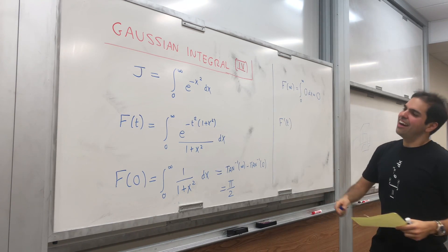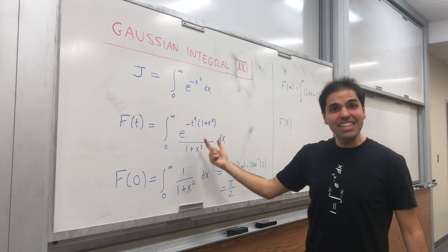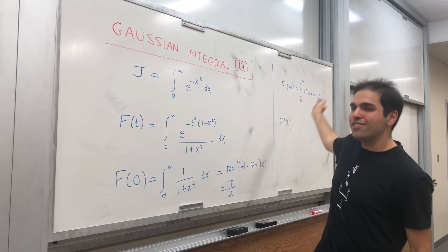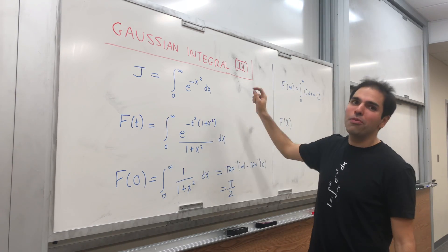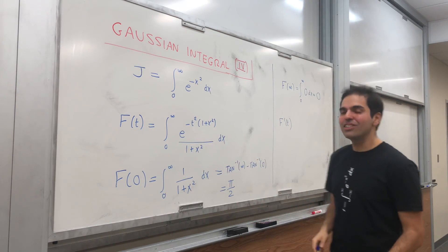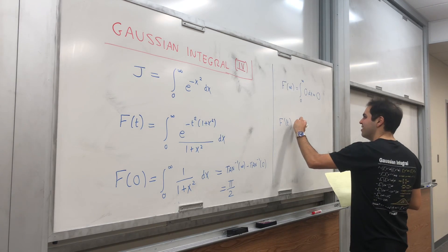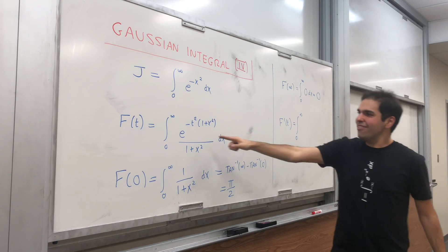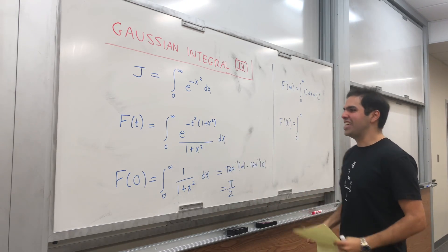So f prime of t, again, it's very dangerous to differentiate under the integral. But because this function goes to zero pretty quickly, I think it's okay. Integral from zero to infinity.